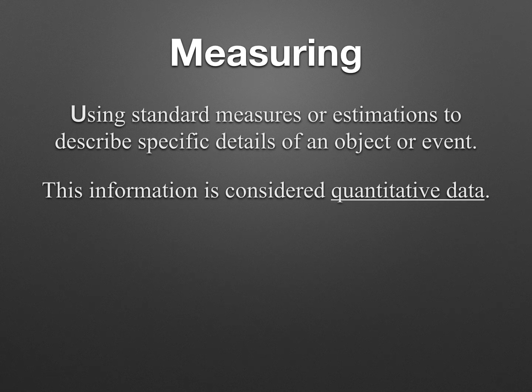The next science skill you need to know is measuring. In science, you have to use standard measures or estimations to describe particular details of an object or an event. This information is considered quantitative data because it's based on numbers. So when you see the word quantitative, that is number-based. Qualitative is descriptions using senses; quantitative data is numbers-based data.